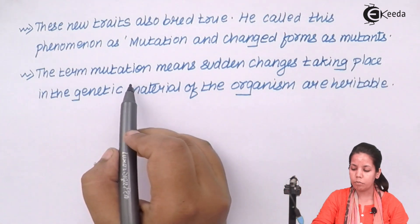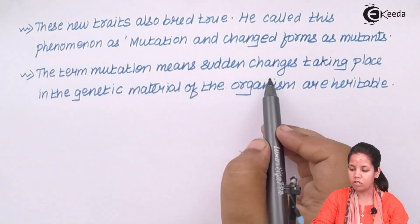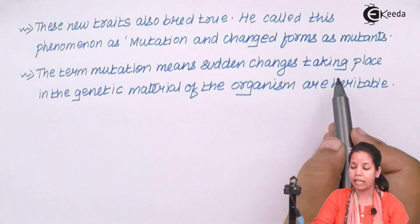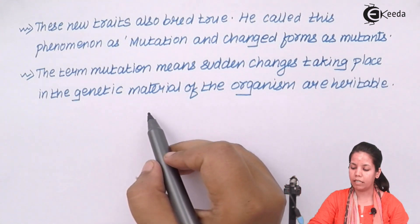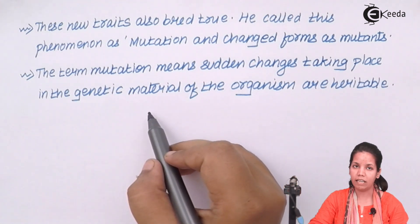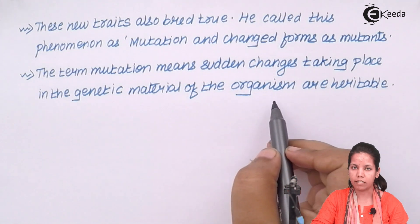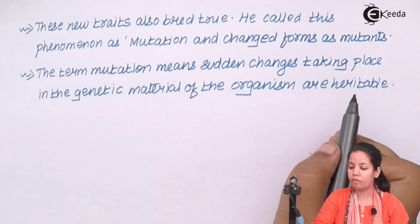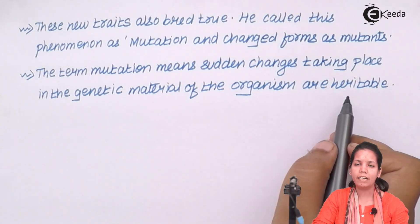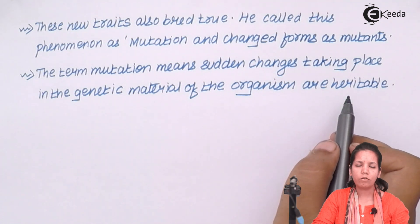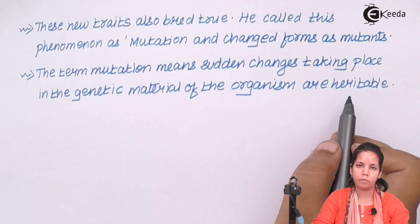The term mutation means sudden changes that were taking place in the genetic material — or simply at the DNA or chromosomal level — of a particular organism, and these changes were always heritable. When we say heritable, it means that they could be passed from one organism to another set of organisms.